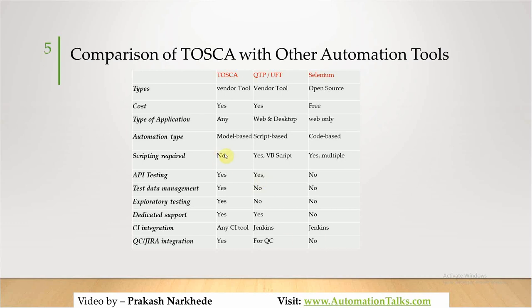For scripting, Tosca requires no coding in about 99% of scenarios; only in very rare cases do you need to develop a special execution task in code. QTP uses VBScript and Selenium supports Java, Python, C#, and others. API testing is possible with Tosca; for Selenium it requires third-party libraries like REST Assured or HTTP Client. Tosca has its own internal test data management, which other tools lack. Exploratory testing is recorded natively in Tosca, and Tricentis provides dedicated support via chat and ticket system.